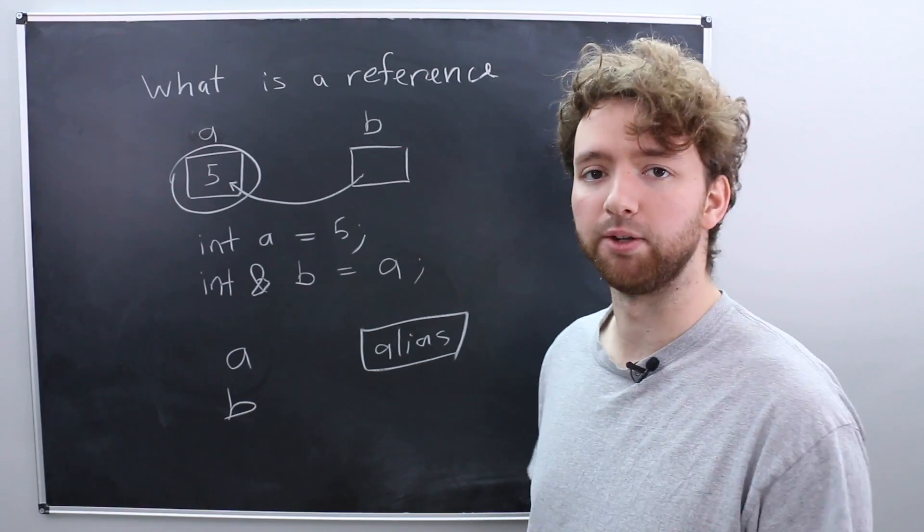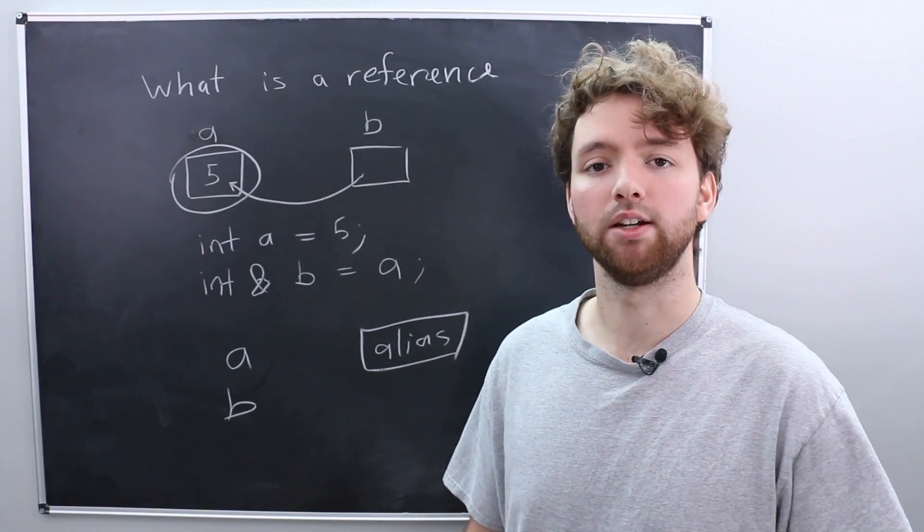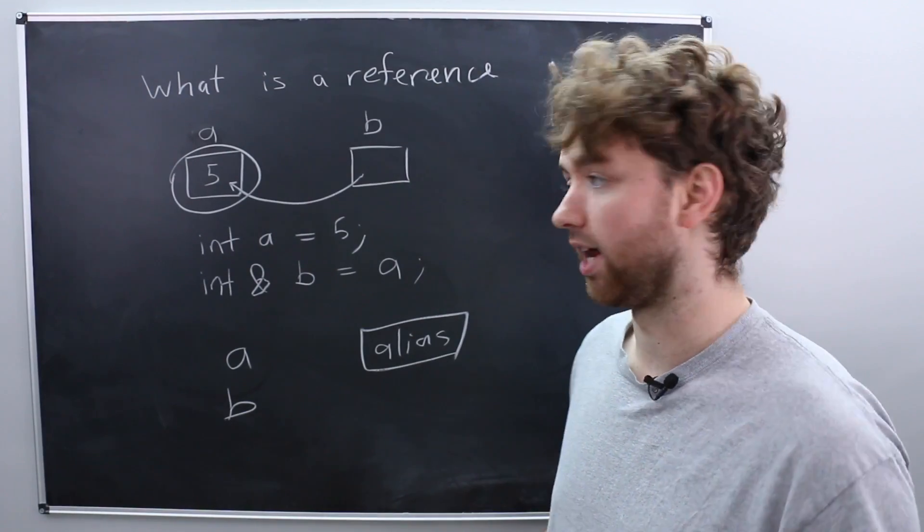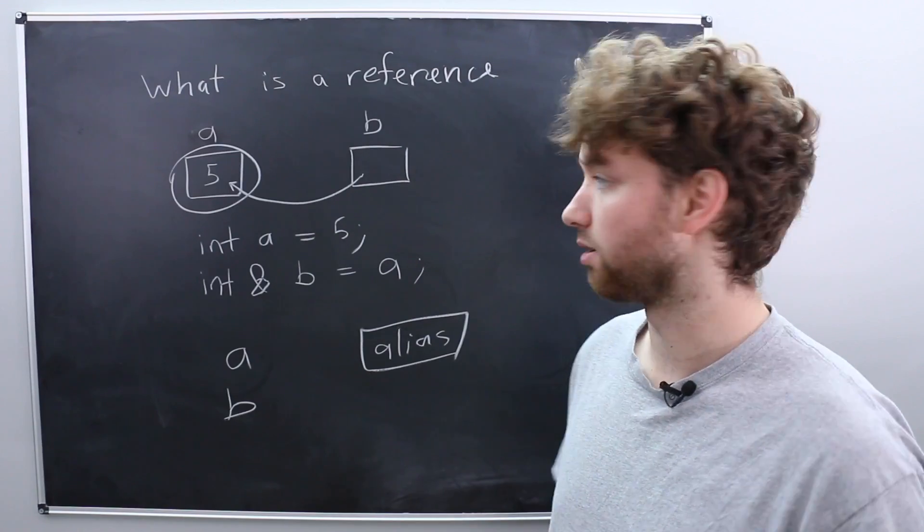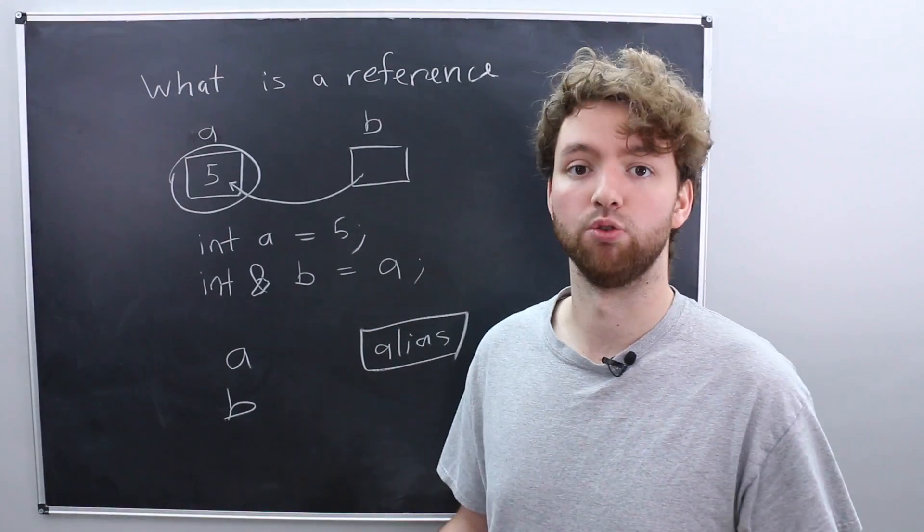It's another name for a variable. So the very first reason you might want to use a reference is if you need an alias for some data. You want to refer it by A and B. So if you have to do that for some reason, then you might want to look into references.